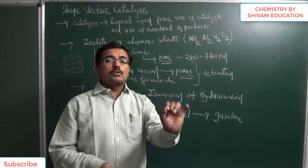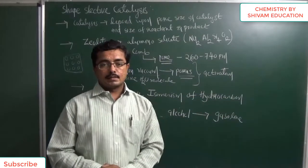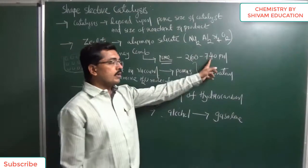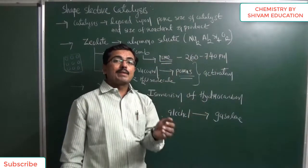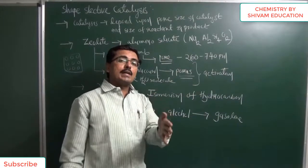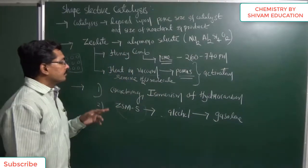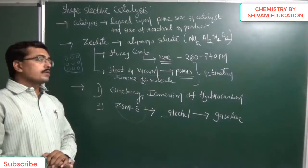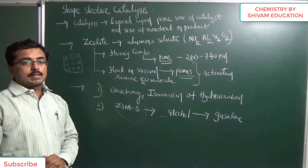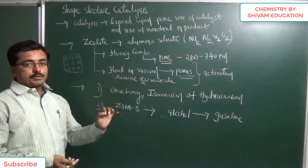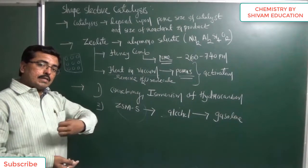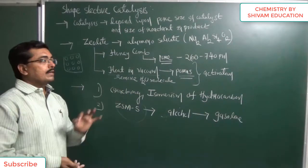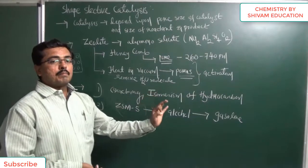Molecules of reactant as well as product which are smaller than 740 pm can adsorb or desorb. So zeolite can be used as a shape selective catalyst. Before using zeolite as a shape selective catalyst, we have to heat it in a vacuum, so that water molecules present on its surface are removed or eliminated and the catalyst becomes porous. This process is considered the activation of the catalyst.